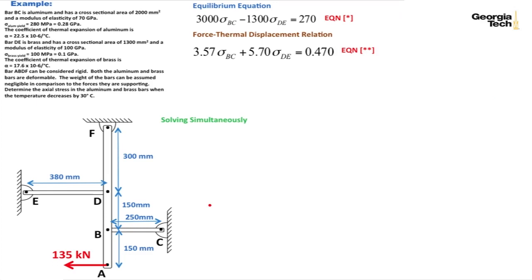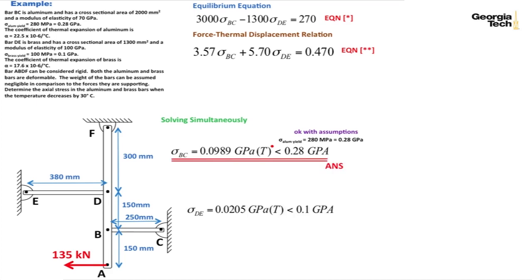We can solve those simultaneously. We find out that the stress in bar BC, the aluminum bar, is 0.0989 GPa in tension. That's less than our yield stress, so we are still in the linear elastic region. We had made the assumption that delta equals PL over AE and it holds, as I show here. So we're okay with that assumption. The stress in bar DE, if you do that calculation, this is what you should have come up with. Again, we find out that it's less than the yield stress for brass. And so our assumptions hold and this is the stress in the brass bar. We've gone ahead and completed the problem.